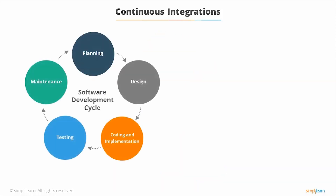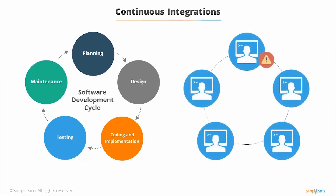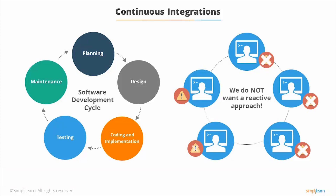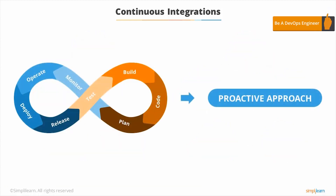Some of the problems with the standard development cycle are that it is very human error prone. For example, if a developer forgets to commit the latest version of the code to the repository, then the rest of the developers on the same project will be affected, causing confusion and delays. If no bugs are caught, then buggy software is released to the consumer, and it becomes much more difficult to fix bugs that could have been caught early. We do not want a reactive approach — we want a proactive approach. We want the continuous integration approach.